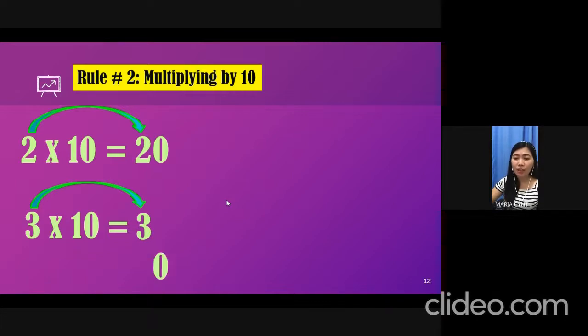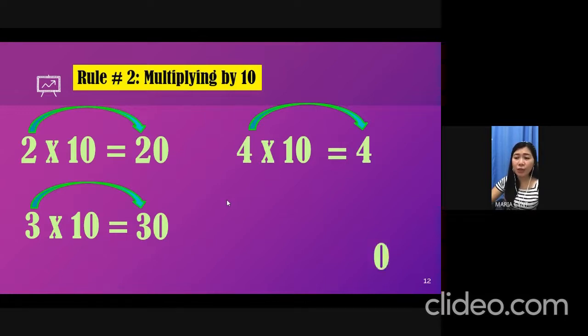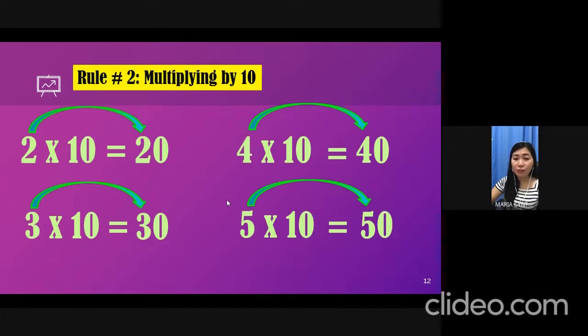Second example, 3 times 10, what do you think is the answer? 3 times 1 is equal to 3, and don't forget to add 1, 0 on the end. So, the answer is 30. Third example, 4 times 10. 4 times 1 is equal to 4, and then add 1, 0 on the end. So, therefore 4 times 10 is equal to 40.